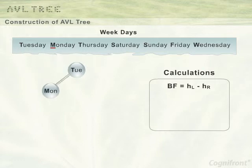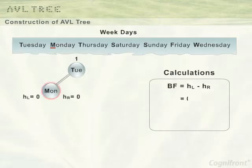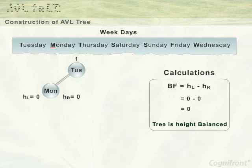The next element is Monday, which is alphabetically smaller than Tuesday, so it is inserted at the left side of Tuesday. Then we calculate the balance factor of both nodes. For Tuesday, HL is 1 and HR is 0, so the balance factor of Tuesday is 1. The balance factor for Monday is 0 minus 0 equals 0. So the tree is height balanced.